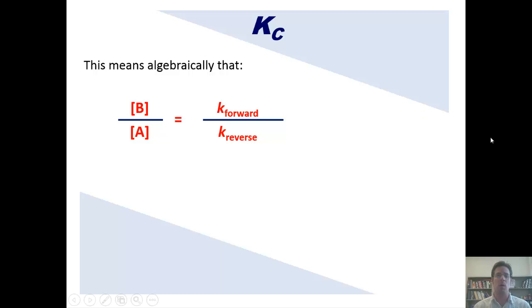Because K forward and K reverse are both constants, we can simplify this to just say that the concentration of B divided by the concentration of A is just equal to some constant. Got it? K.